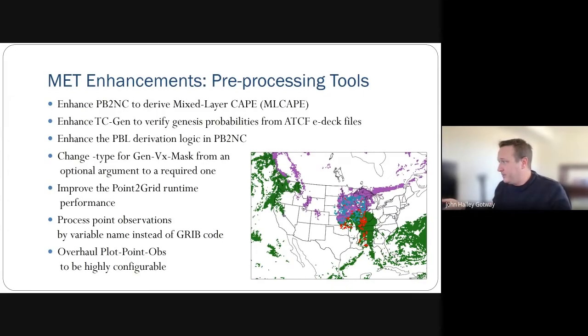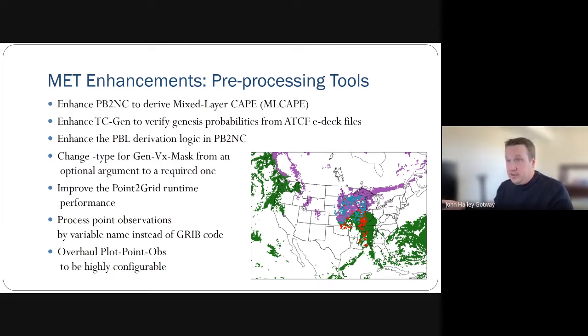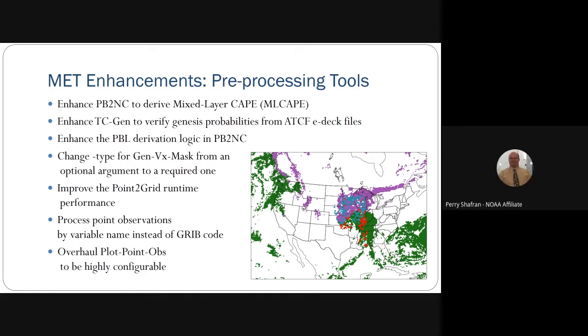All variables that begin with 'D underscore' in the PB2NC configuration file are derivable. There's also presumably a list in the user's guide. A link was dropped in the chat to the release notes in the MET documentation — you can search for PBL in the release notes, that's issue 1913. Basically, there were some unrealistic PBL values being computed, and in working with folks at EMC, the error-checking derivation logic was refined to replace any values greater than 10,000 with bad data.